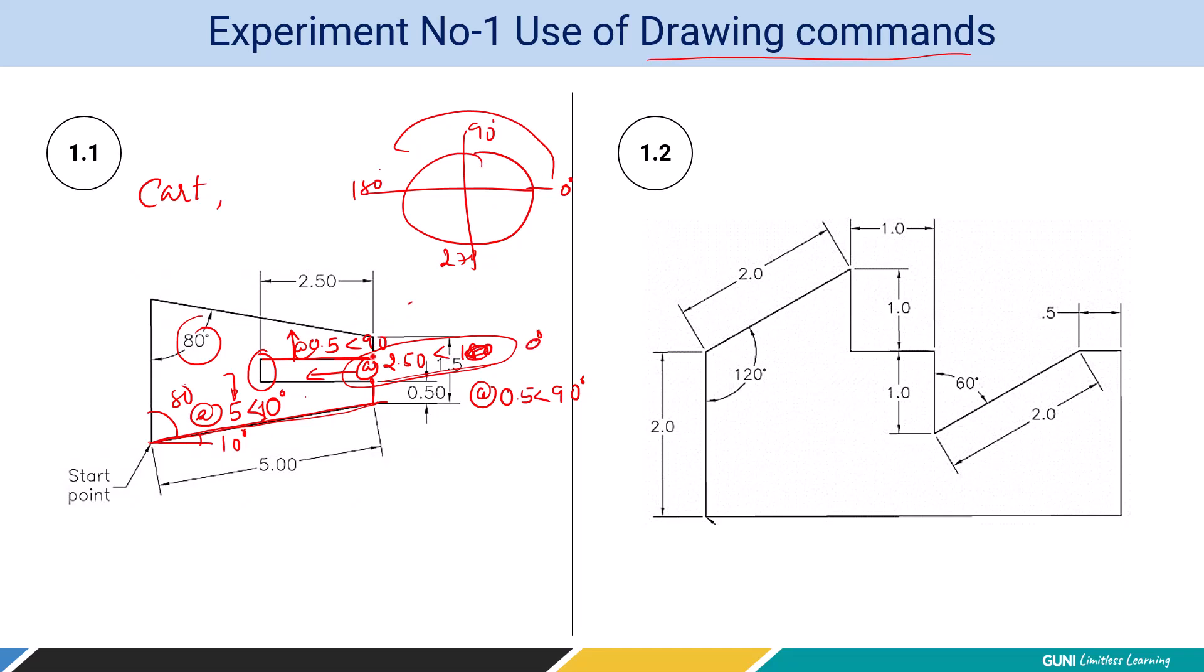After that, we are going to move up. So for this vertical line, again, we are going to type 0.5 less than 90 degree. Now we are on this last line.